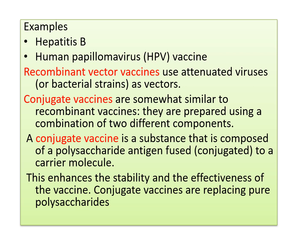An example is the Human Papilloma Virus vaccine. Recombinant vector vaccines use attenuated viruses as vectors — they act as vectors for vaccination, such as varicella. Conjugate vaccines are somewhat similar to recombinant vaccines but are prepared using a combination of two different components. The conjugate vaccine is a substance composed of a polysaccharide antigen fused to a carrier molecule, which enhances the stability and effectiveness of the vaccine. Conjugate vaccines are replacing the pure polysaccharides used in older methods, improving stability and effectiveness.